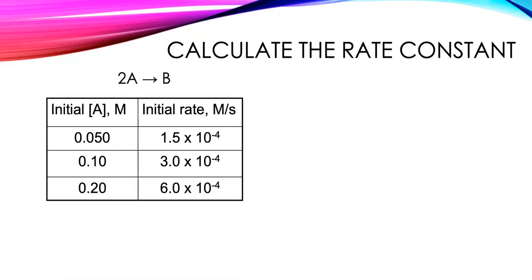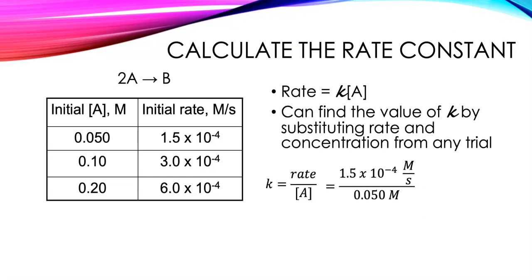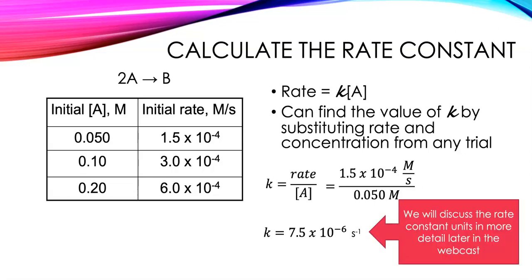Once we have the rate law, we can actually calculate the rate constant from our experimental data. We rearrange the rate law to isolate k, then substitute the rate and concentration data from any single trial. I'll pull data from trial one: the molarity cancels out and I'm left with units of seconds to the minus one, or inverse seconds. If my data is reliable, I should get the same value for the rate constant from any of the three trials.